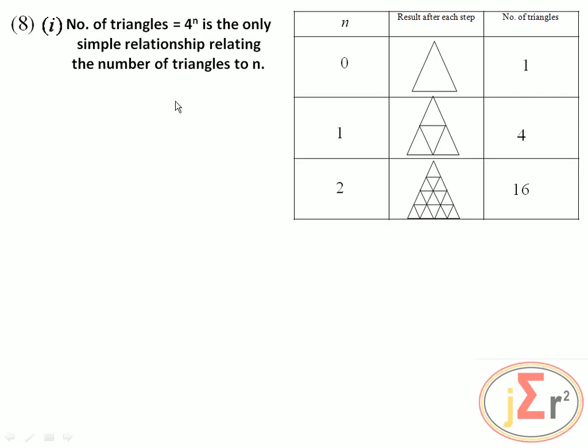We need to find the number of triangles formed when n is equal to 3. That will be equal to 4 to the power of 3, which is equal to 64.